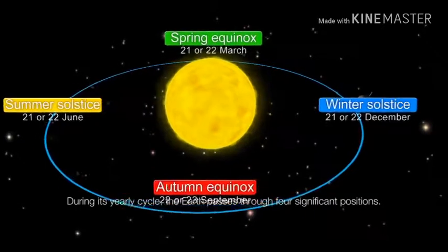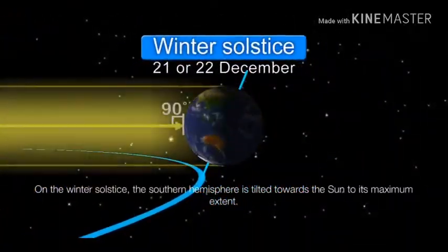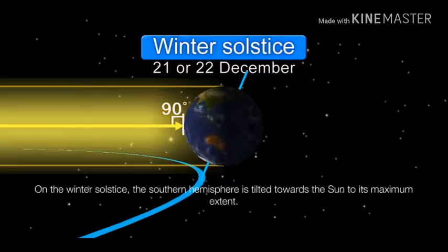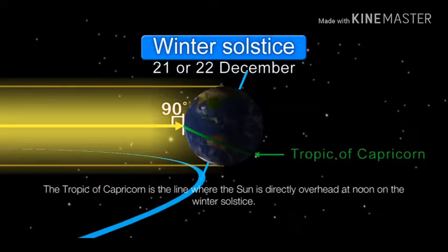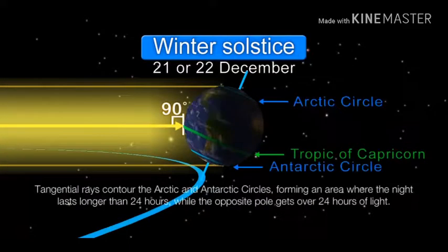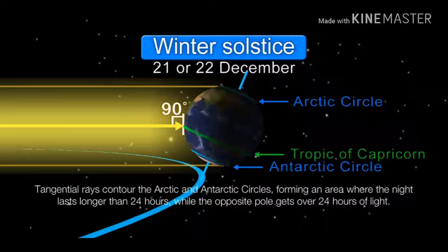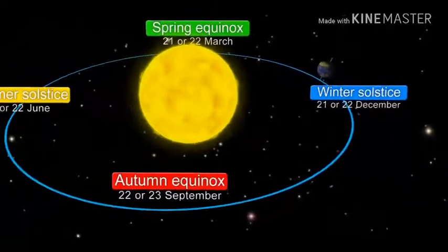On the winter solstice, the southern hemisphere tilts to its maximum extent toward the Sun. The Tropic of Capricorn is the line where the Sun is directly overhead at noon on the winter solstice. Tangential rays contour the Arctic and Antarctic circles, forming an area where the night lasts longer than 24 hours, while the opposite pole gets over 24 hours of light.